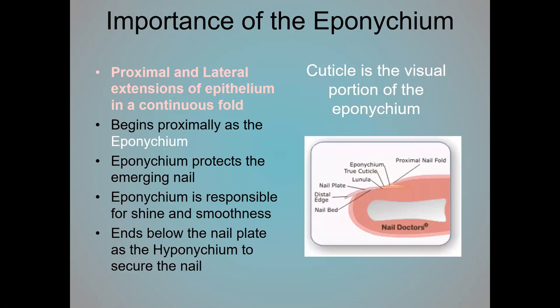I want to point out the importance of the hyponychium — the skin that creates the cuticle area. The eponychium starts proximally and extends on both sides and distally. Its goal is to protect the emerging nail plate and is also responsible for the shine and smoothness of the nail. Any damage to the eponychium or cuticle — which is the visible portion of the eponychium — can cause problems with the nail plate itself. This is very important when talking about pedicures, because the cuticle is an important protection point for the nail plate.